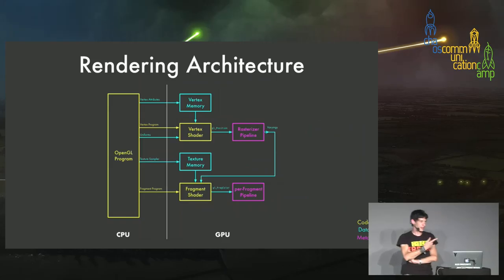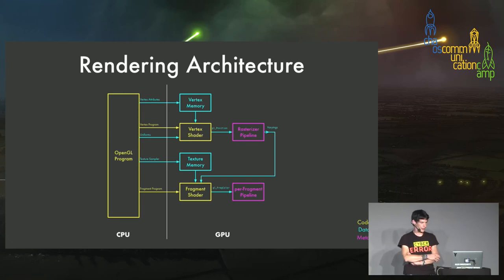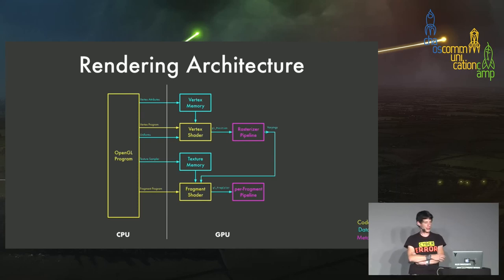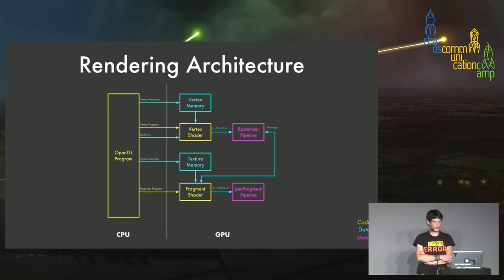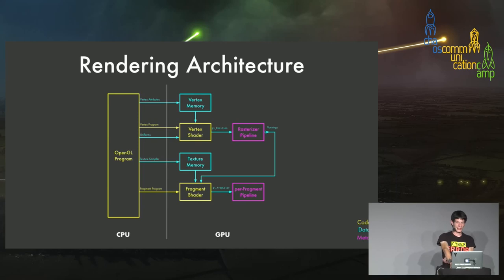Once data is on the GPU, the vertex shader and fragment shader can access it very quickly. The OpenGL program uploads vertex data, texture data, and specifies the vertex and fragment shaders. When rendering, the vertex shader takes all geometry and transforms, moves, scales, and ultimately projects it. It passes data into the rasterizer stage, which does the actual projection, figures out which vertices end up where on the 2D surface, and produces fragments. Those fragments are then passed into the fragment shader, which accesses textures and writes color values into the fragment pipeline, and the result shows up in your framebuffer on screen.